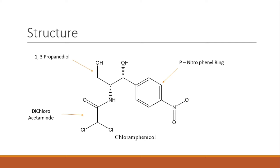The structure of chloramphenicol has three main parts. First is the paranitrophenyl ring. Second is the 1,3-propanediol moiety — having three carbons (propane) and two OH groups (diol). Third is the dichloroacetamide moiety, which has two chlorine atoms and an acetamide structure.